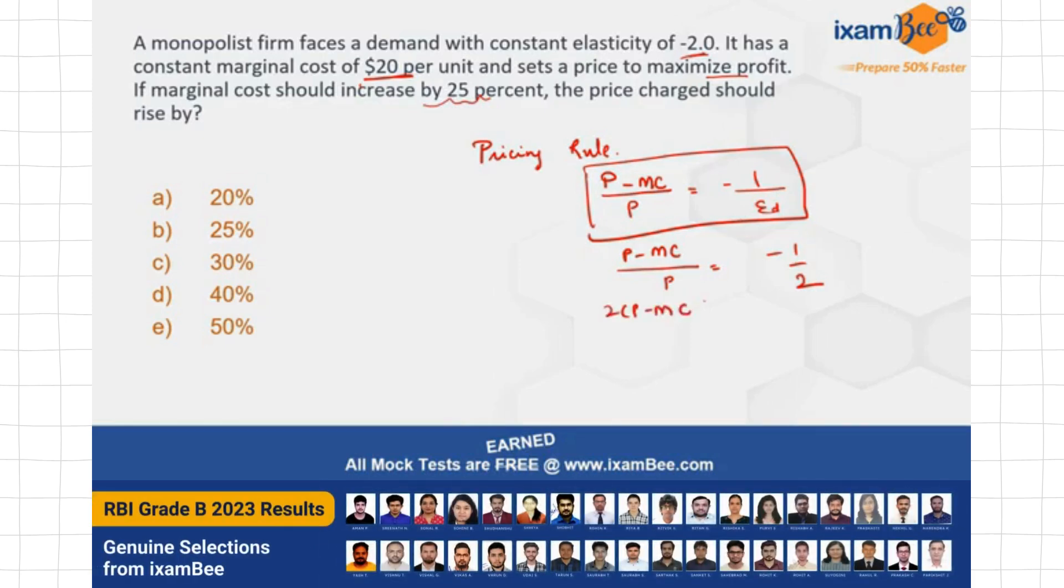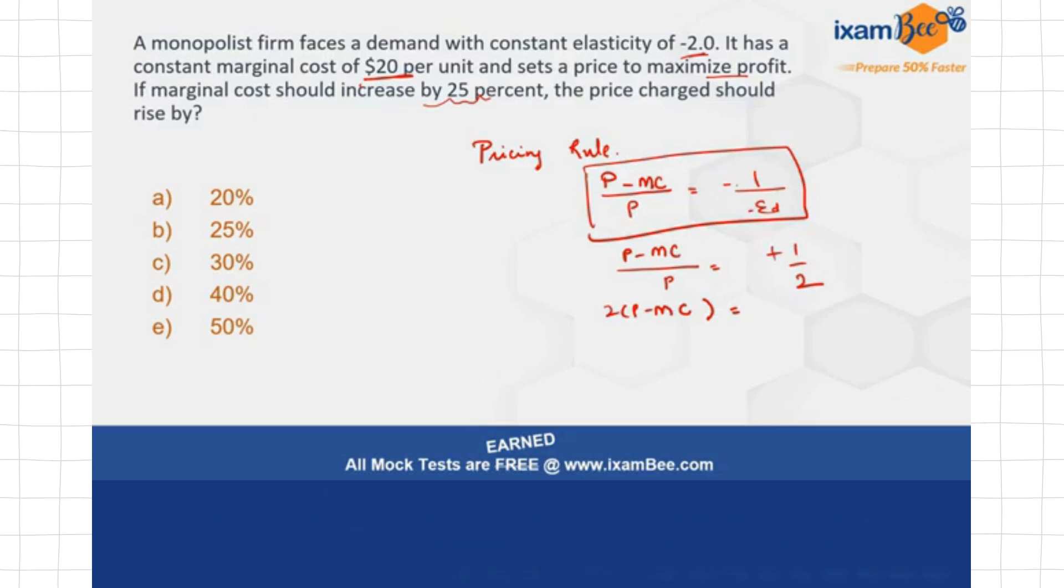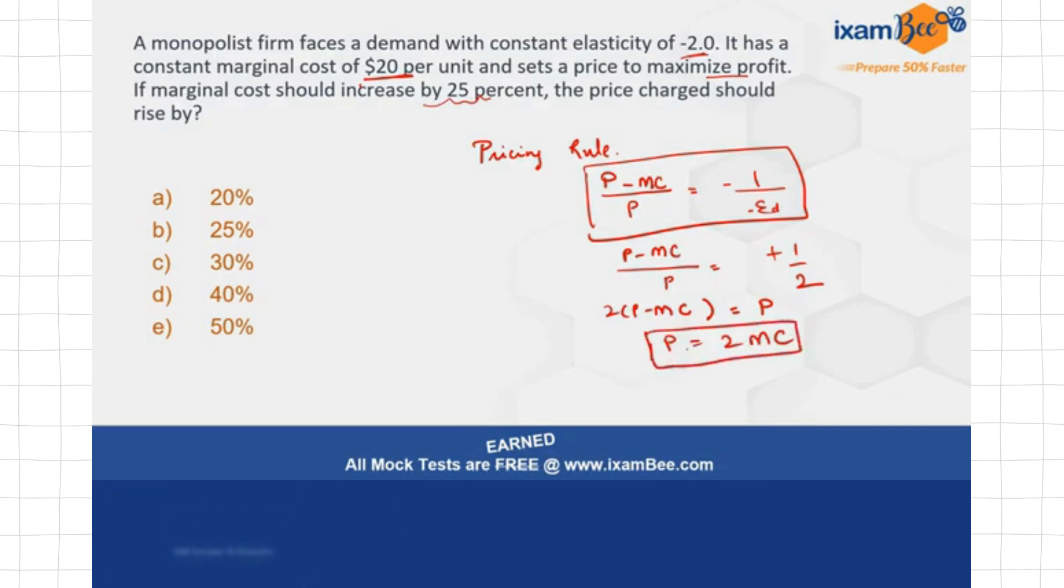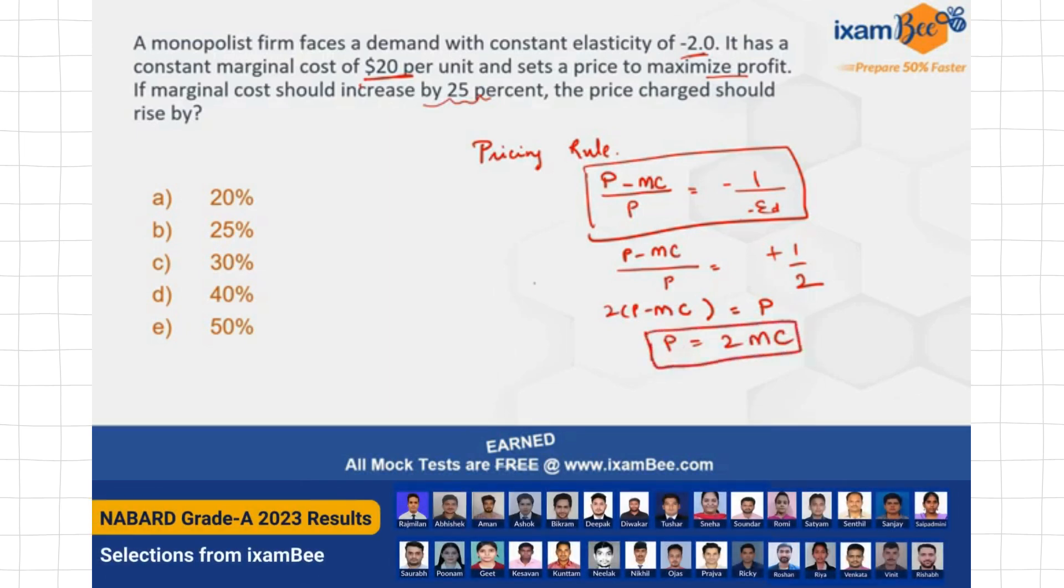So 2 times (Price - Marginal Cost) is actually equal to the Price. So this means that Price is equal to twice of the Marginal Cost. This is the relationship that you are going to get here. Now see, the second part of the question says if marginal cost should increase by 25%, then the price charge should rise by how much?